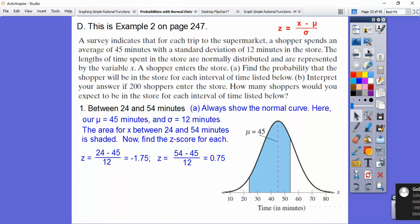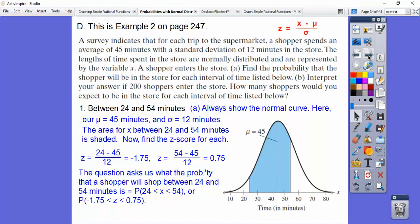Okay, so we get a Z score, negative 1.75. So this is going to be a Z score right here, negative 1.75. And this is going to be a Z score, 0.75. Now when we look them up on the table, negative 1.75 would be this little chunk right here, this little piece right there. And then when we look up 0.75, it's going to be from here all the way over. So do you remember what we do with those two probabilities? We end up subtracting them. Okay, so anyways,